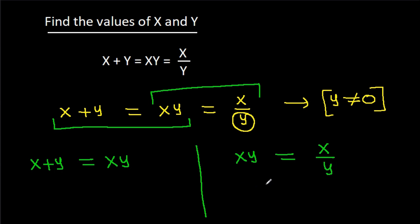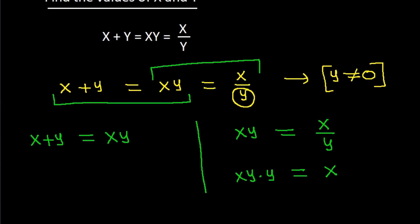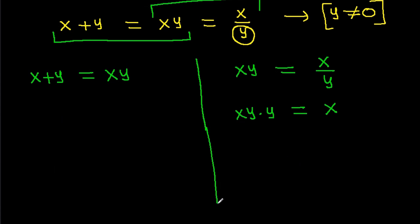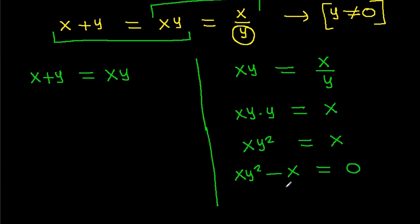If we try to solve the second equation by cross-multiplying, then x times y times y equals x, which gives us x times y squared equals x. Rearranging, x times y squared minus x equals 0.